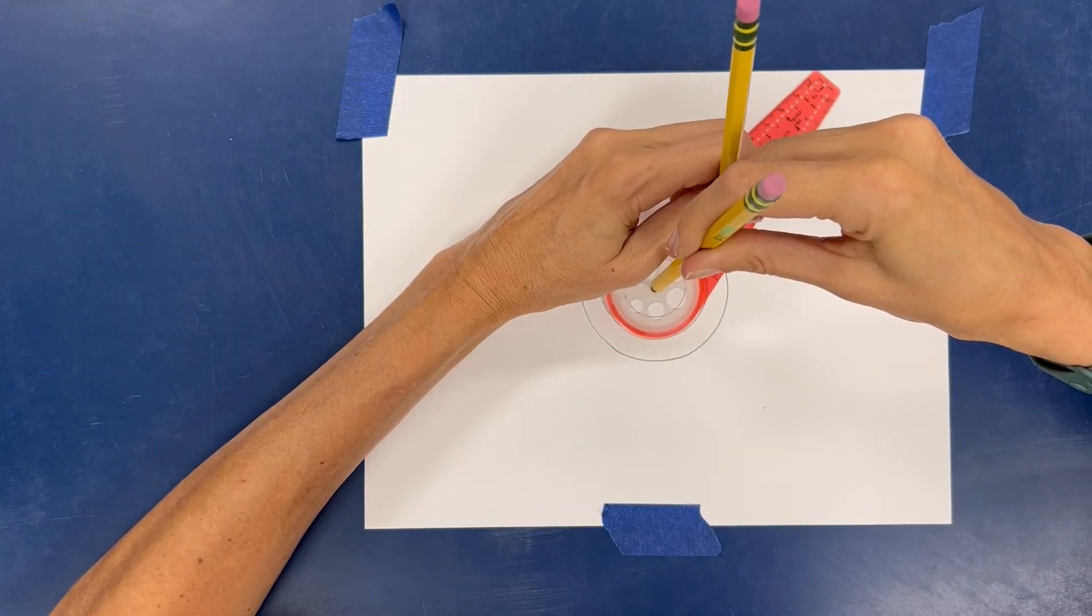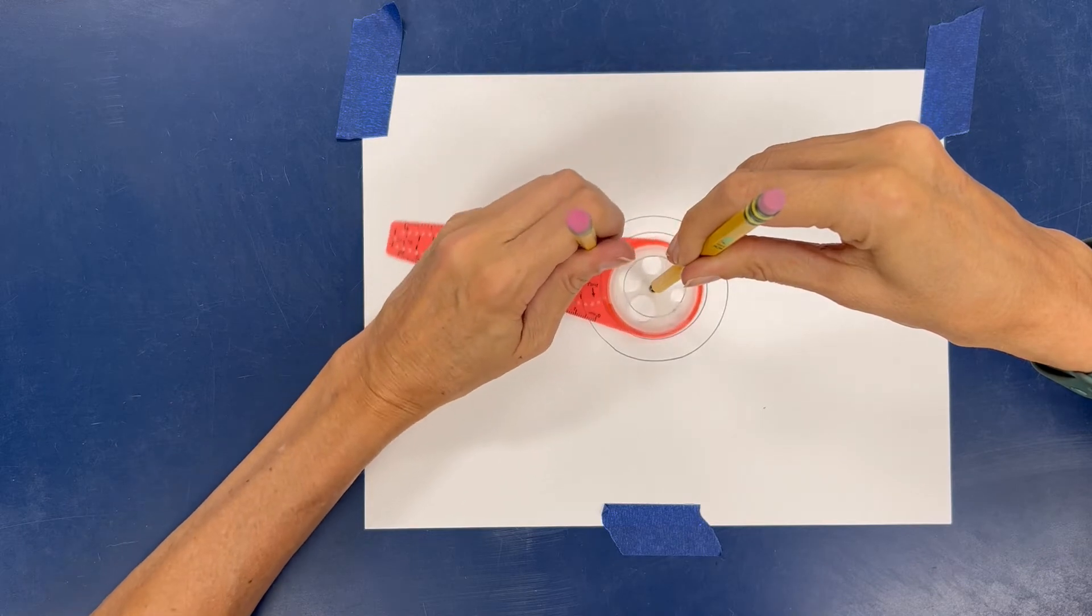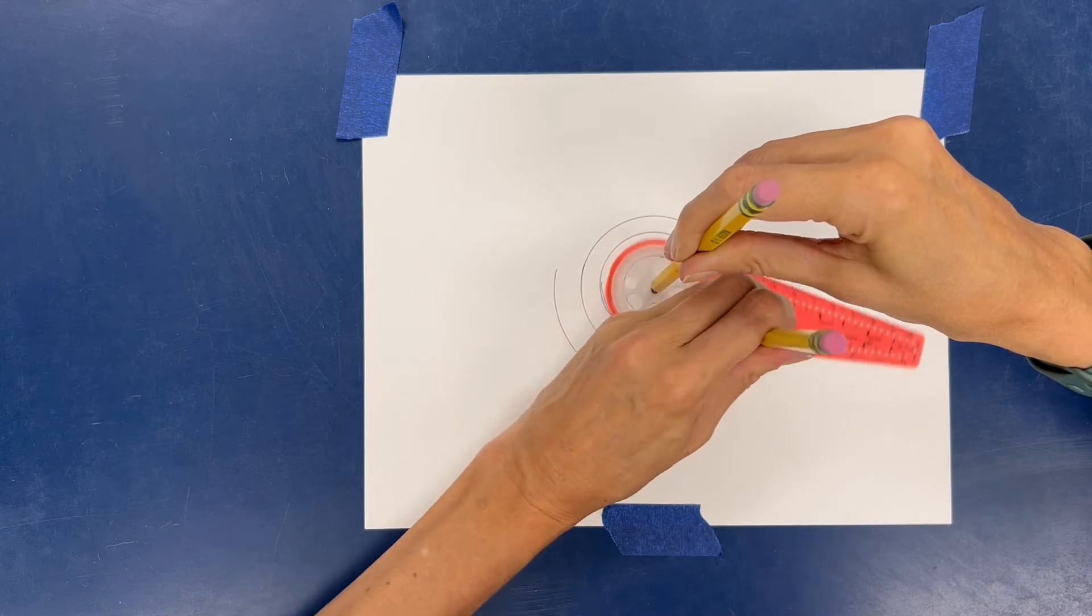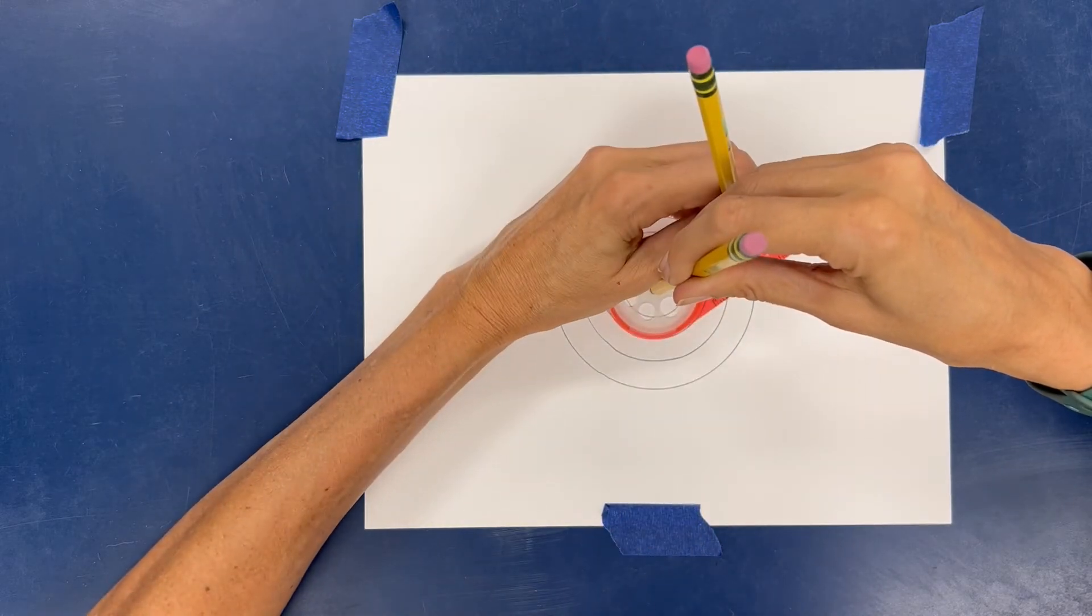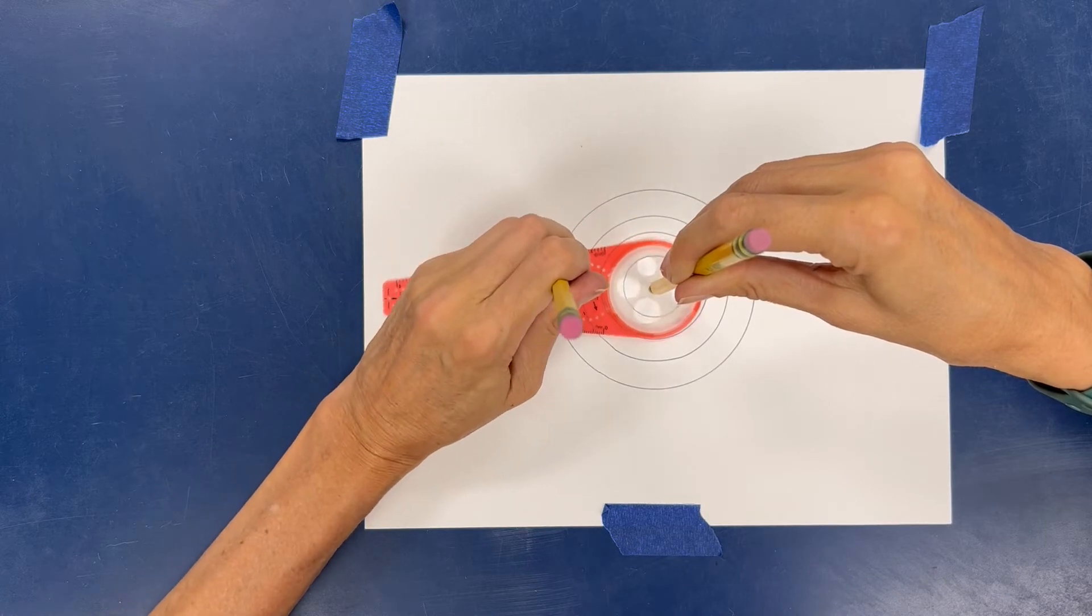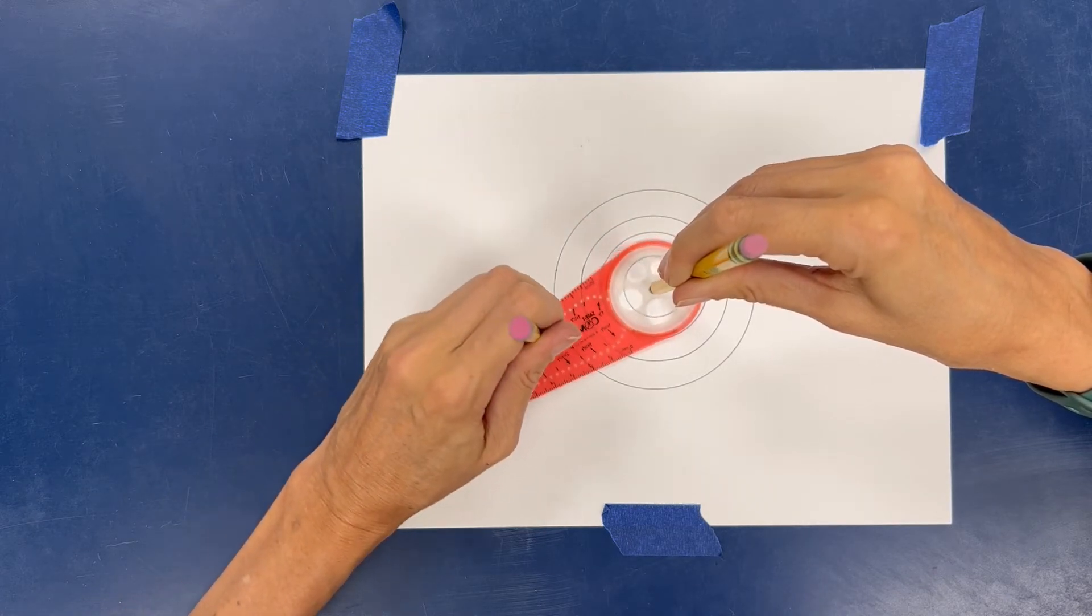Put it in that exact same dot. Do it again. Keeping my left hand still or the hand that does not draw still while the other hand does all the work.